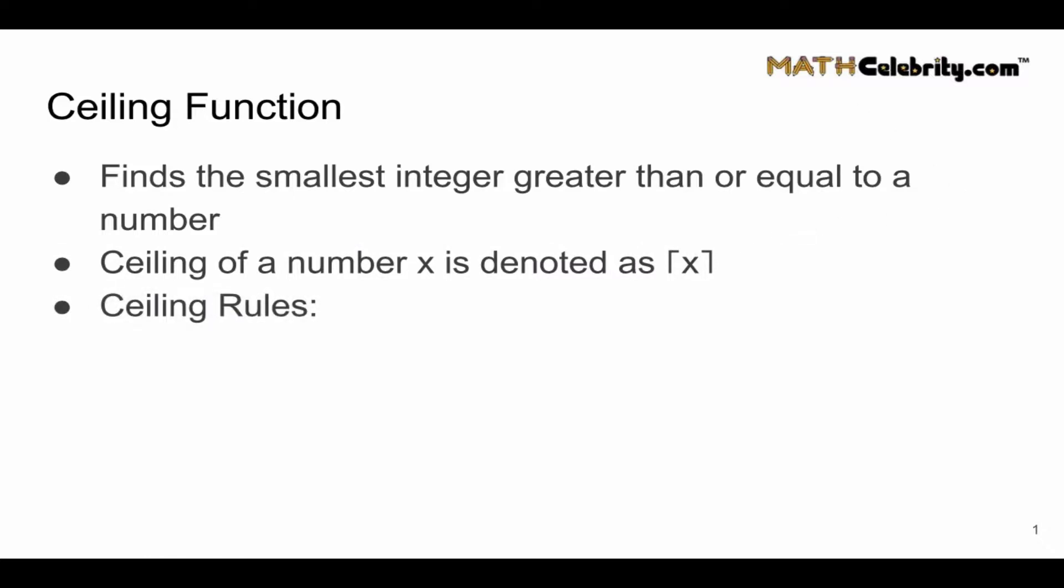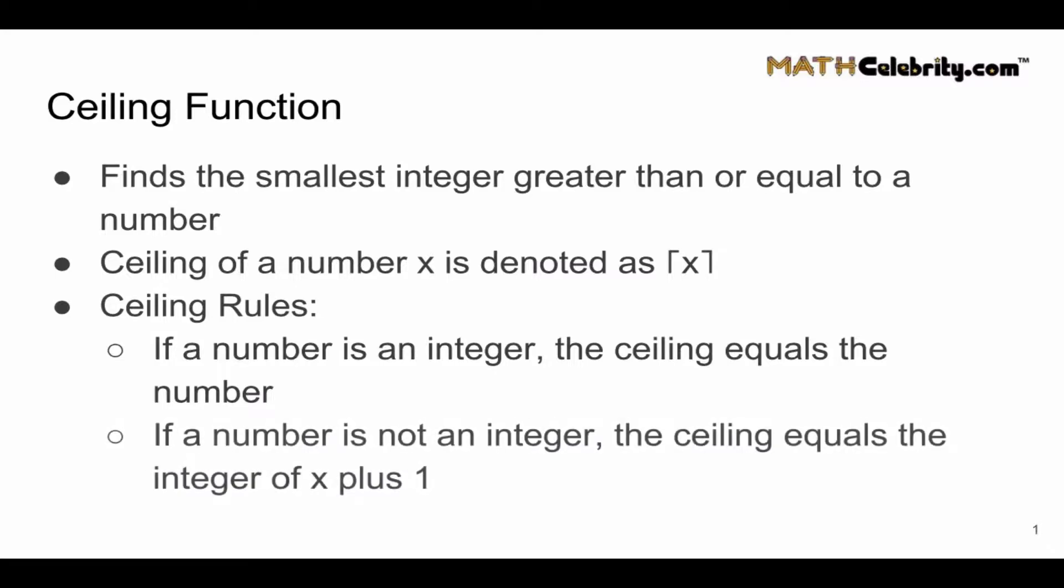Here's the ceiling rules, and it's a two-part setup. First, if the number is an integer, the ceiling of the number equals the number itself. If the number is not an integer, so it's a decimal, the ceiling equals the integer of x plus 1, or as we stated in the first point, the smallest integer greater than the number.